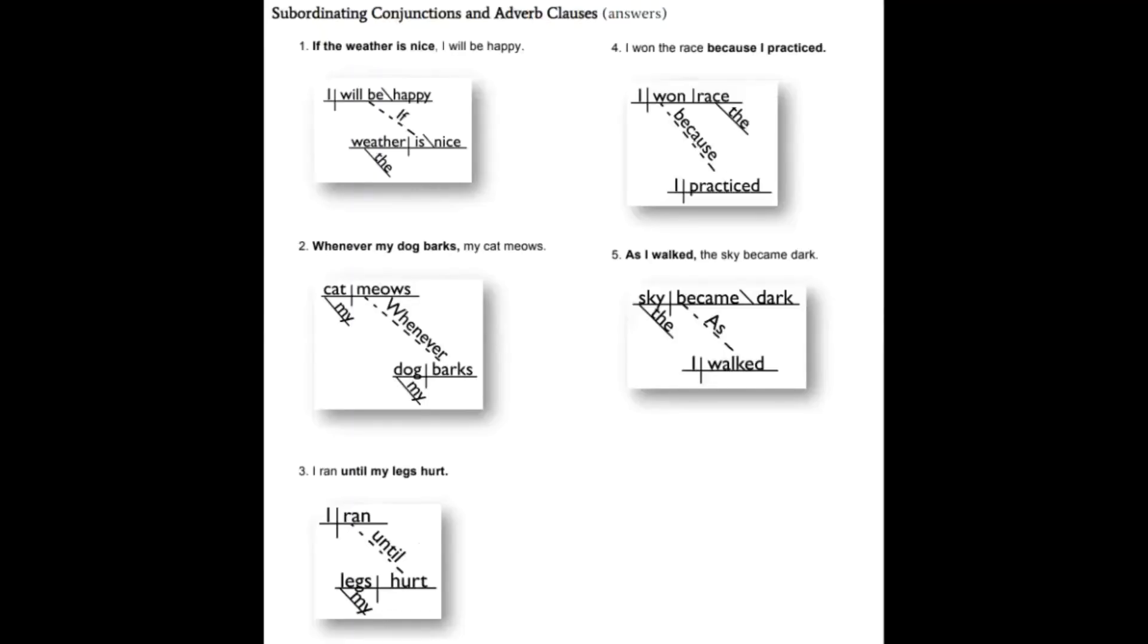Okay, let's take a look at number two: 'Whenever my dog barks, my cat meows.' The dependent clause is 'whenever my dog barks,' and thus it will occupy the bottom half of the diagram. So even though it's the opening clause in the sentence, it still sits at the bottom.